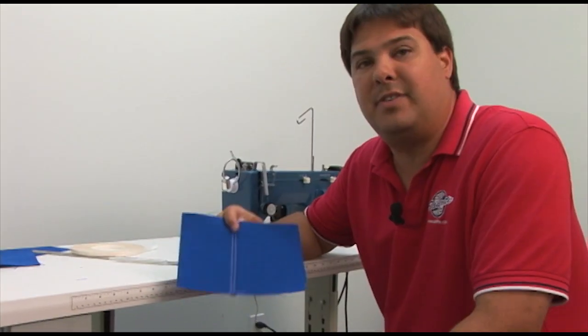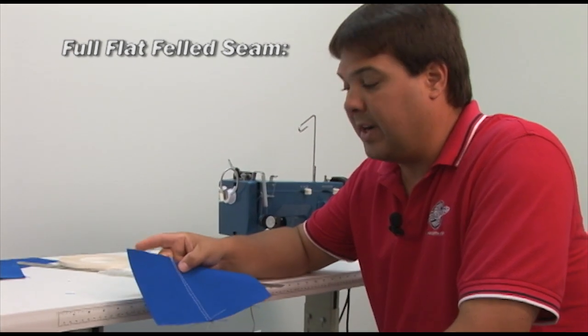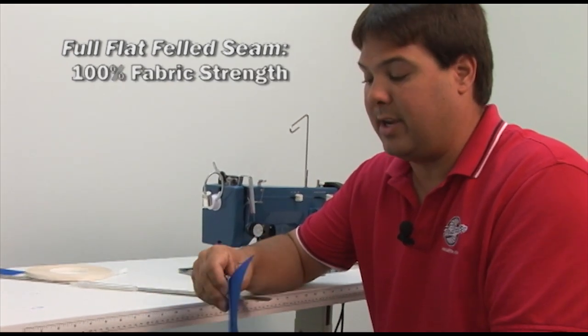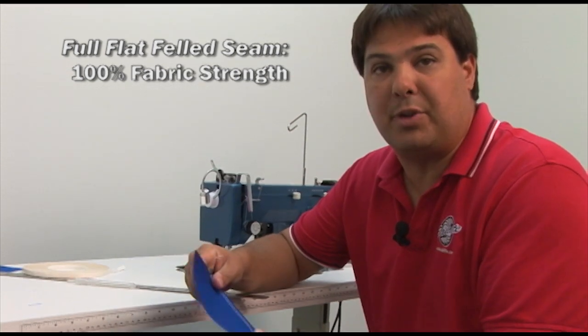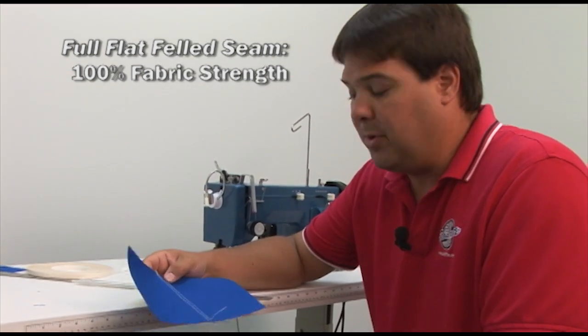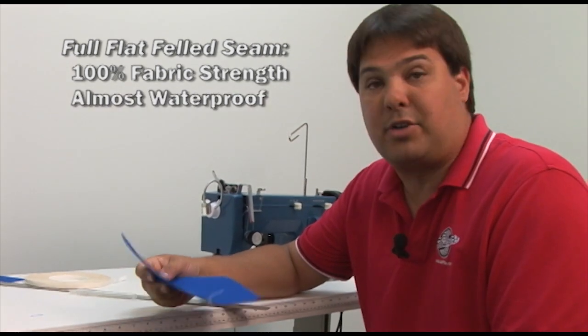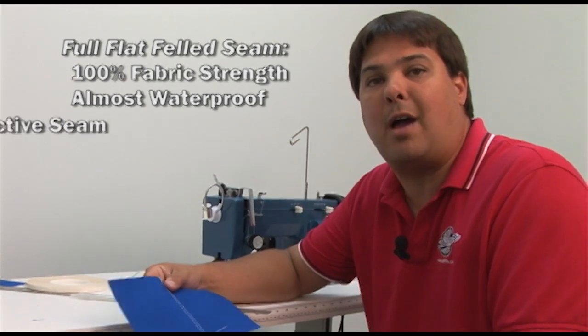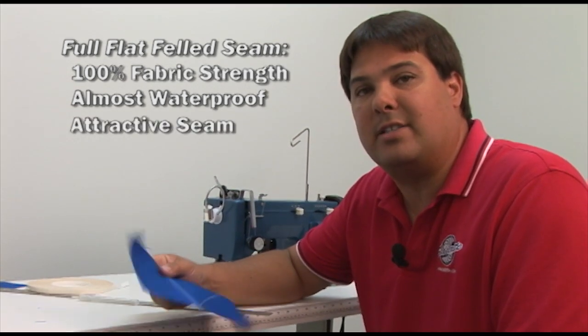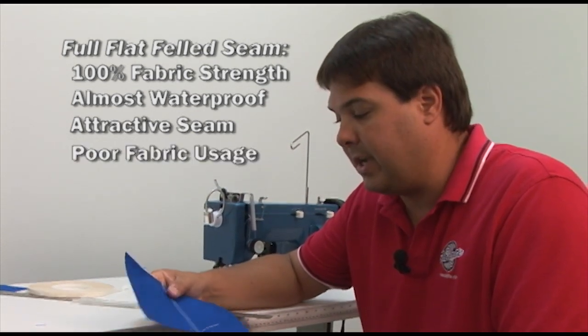The properties of this type of stitch, the full flat felled stitch, would be that it is very strong. As a matter of fact, it's nearly a hundred percent of the fabric strength because of the amount of material that's rolled into that seam. The other thing about this stitch is that it's almost completely waterproof. And of course, we've already talked about the fact that it is attractive and neat on both the top and the bottom surface.